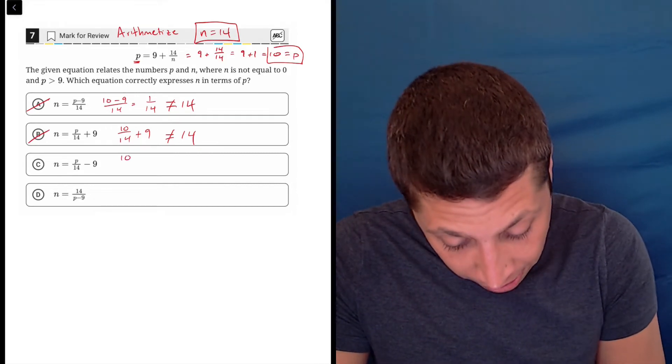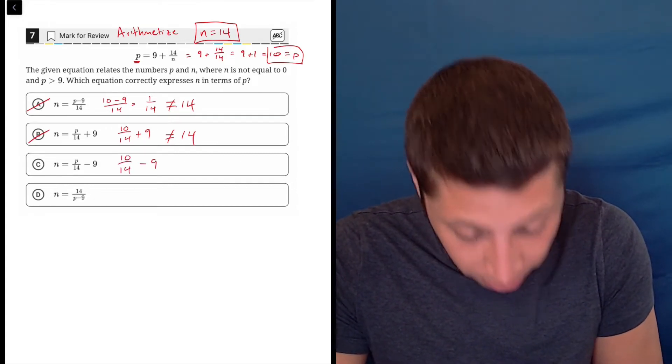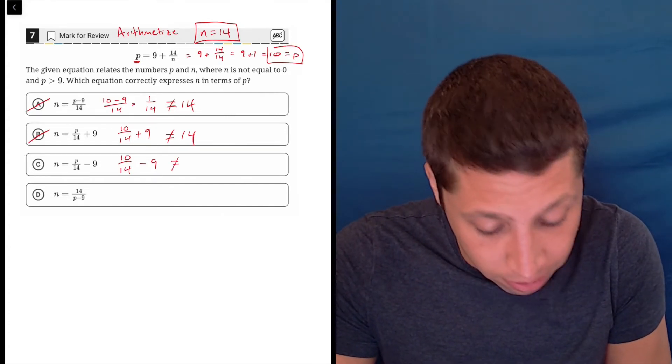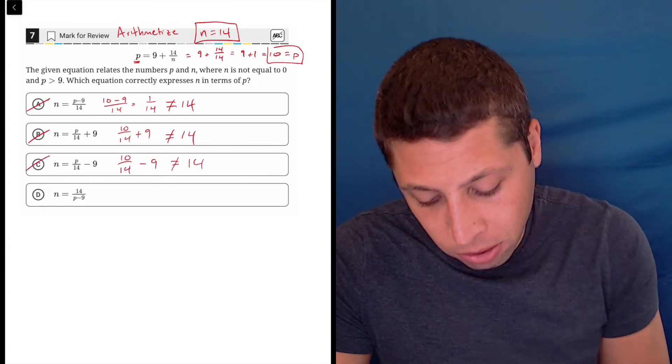Continuing, p is 10, so it doesn't really change anything. In choice C, 10 over 14 is still messy, minus 9, now we're going to have a negative number, so this is totally wrong.